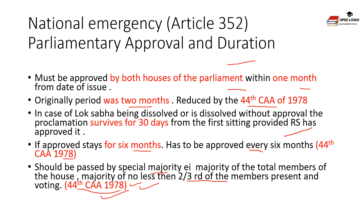To summarize, the 44th Constitutional Amendment Act of 1978 brought major changes to parliamentary approval and duration: it reduced the approval period from two months to one month, required approval every six months by both houses, gave a 30-day grace period if Lok Sabha was dissolved (provided Rajya Sabha had approved), and mandated a special majority instead of a simple majority.